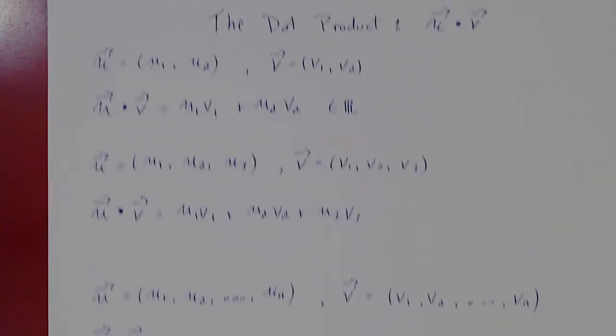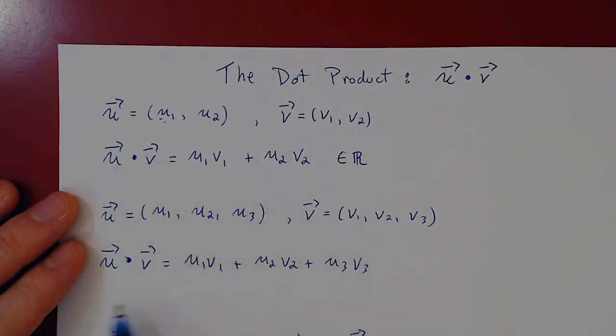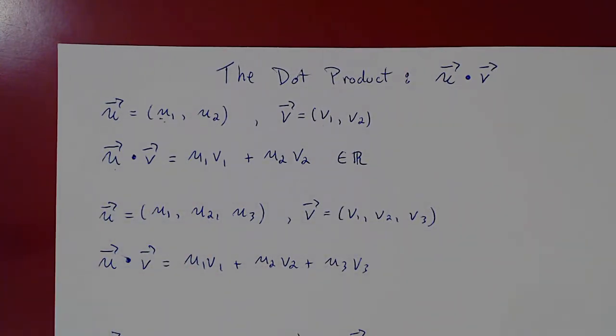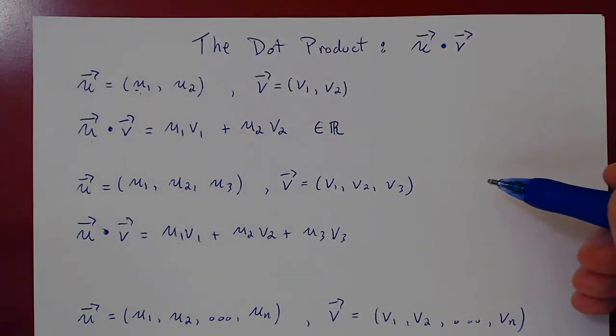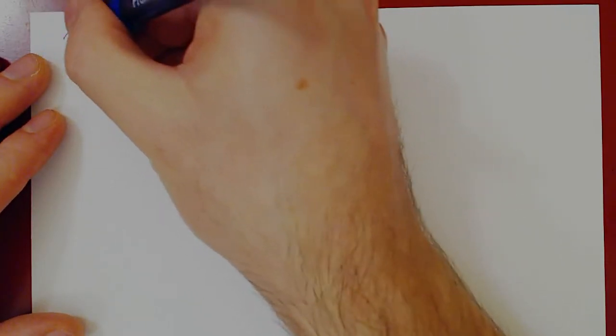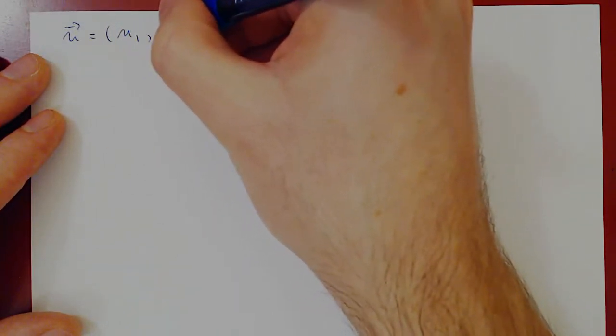Let's go back to just R2 and R3. Every time we have a new algebraic operation, the question is: what are the properties of this operation? So let's look at basic properties of the dot product. The dot product, even though it is a vector operation, behaves just like scalar multiplication — it has all of the same properties. The first property is the intimate connection between the dot product and the norm of a vector squared.